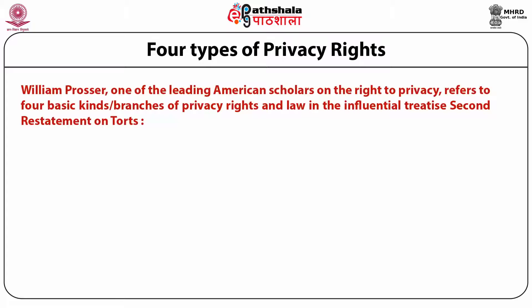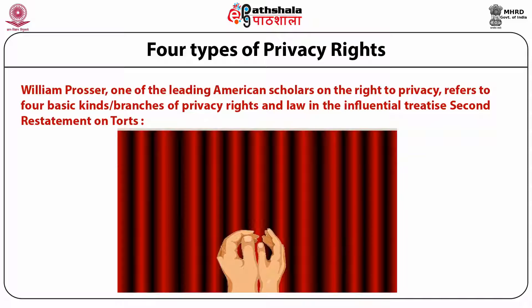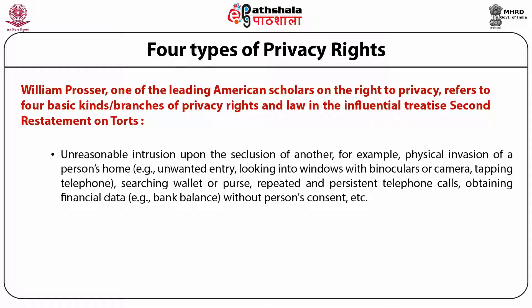William Prosser, one of the leading American scholars on the right to privacy, refers to four basic kinds or branches of privacy rights in the second restatement on torts in the United States. The first category is unreasonable intrusion upon the seclusion of another — essentially, the state should not unreasonably intrude upon somebody else's private domain. He gives examples such as physical invasion of a person's home, unwanted entry, looking into windows with binoculars or cameras, tapping telephones.